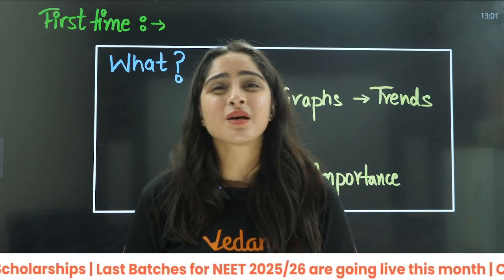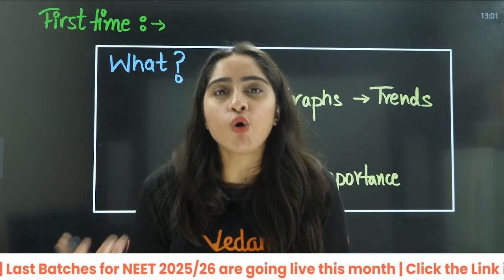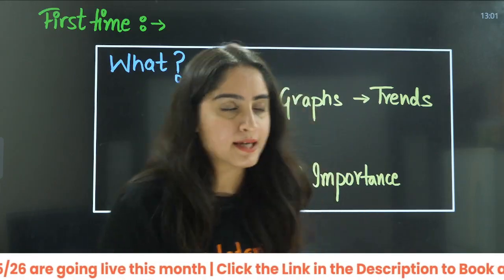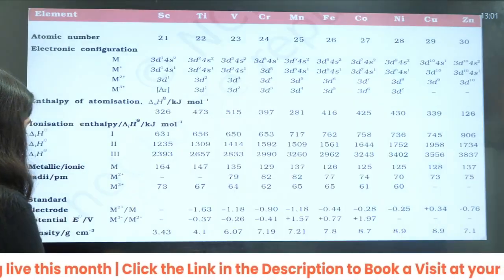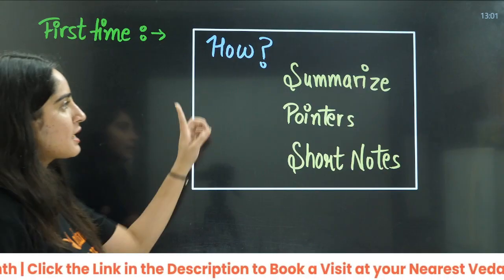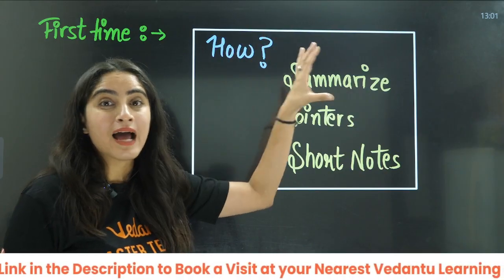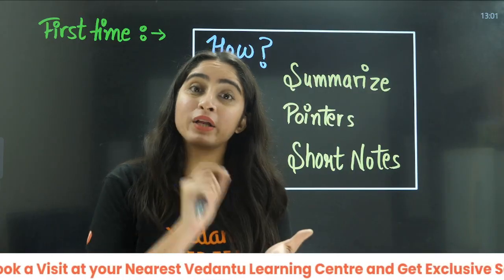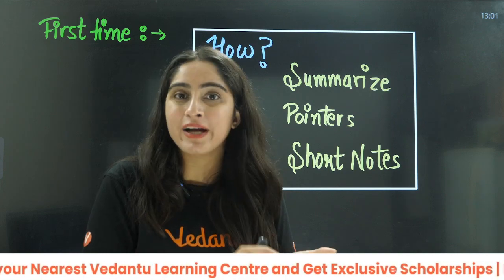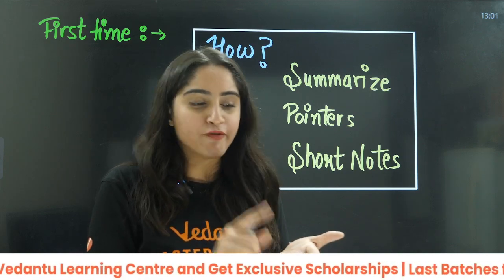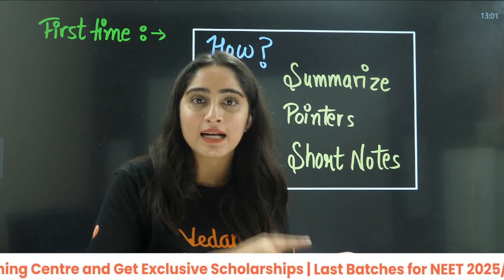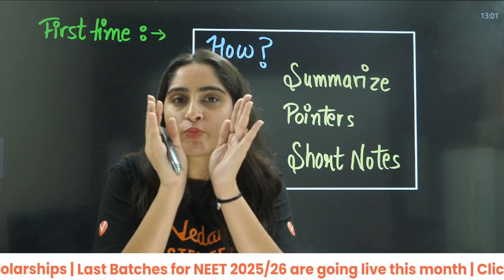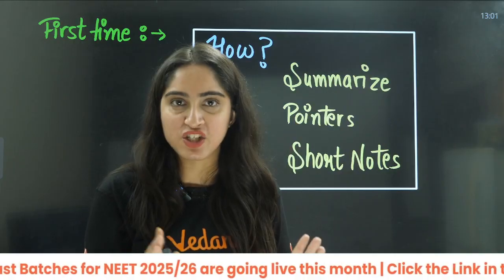Now, how do you make notes and recall things from NCERT? The best way to recall things is to summarize and highlight the important points — make short notes in the form of pointers. First, highlight on the NCERT, then make your own handwritten short notes in a little notebook or small page.